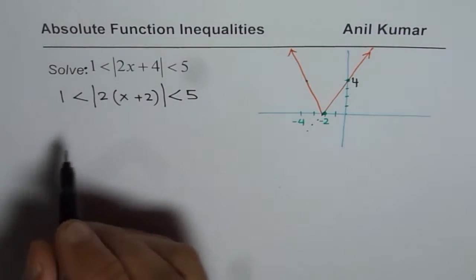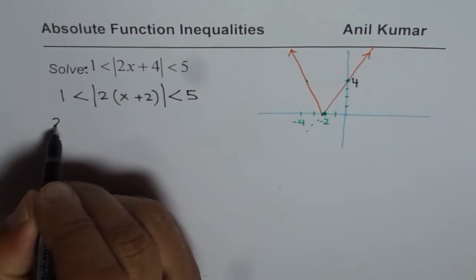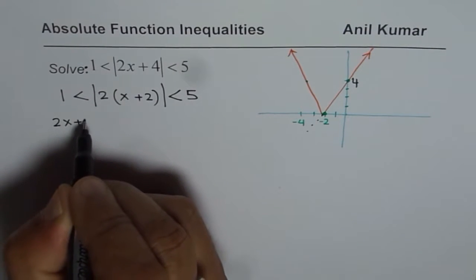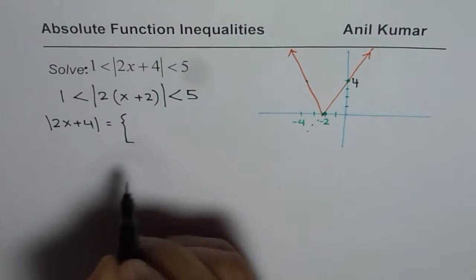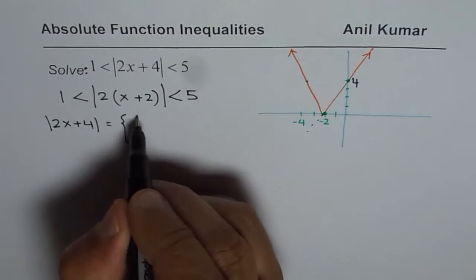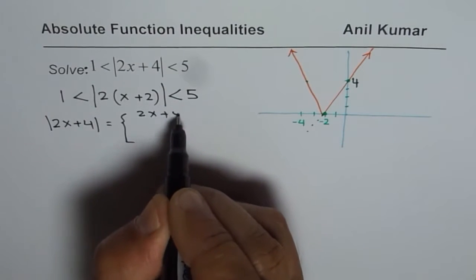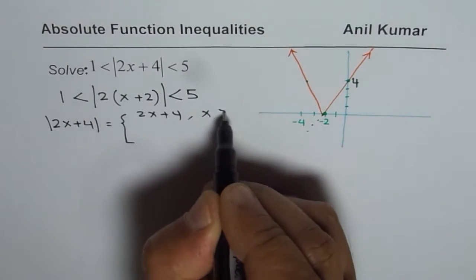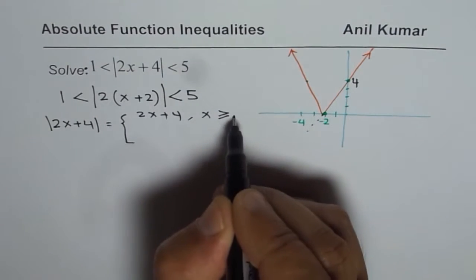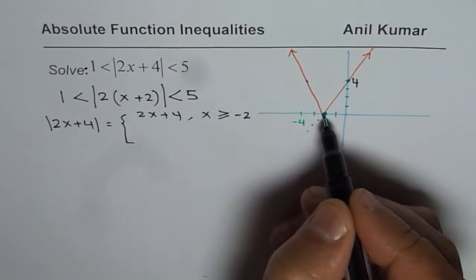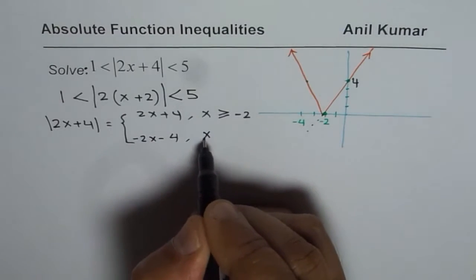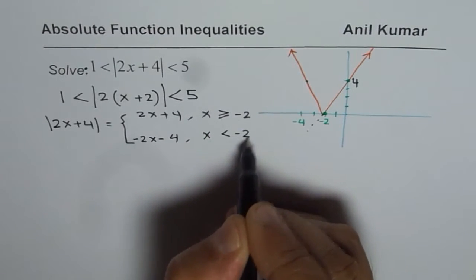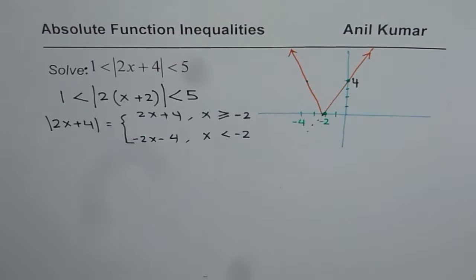So therefore, this absolute function — let me rewrite the original equation, which is |2x + 4| — can be written as a piecewise function. It equals 2x plus 4 (the positive value) when x is greater than or equal to minus 2. However, it is minus 2x minus 4 when x is less than negative 2. That is how we write our absolute function.